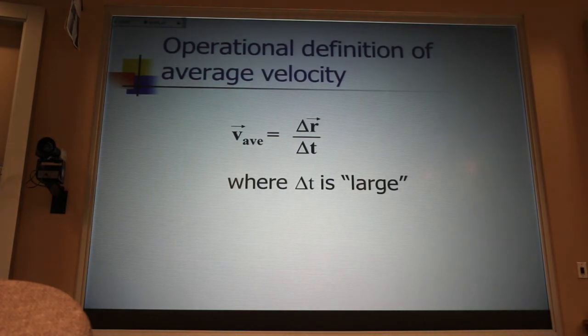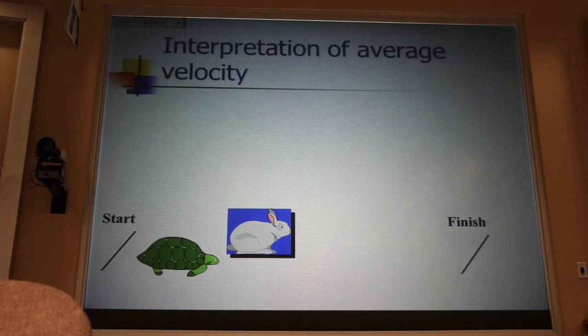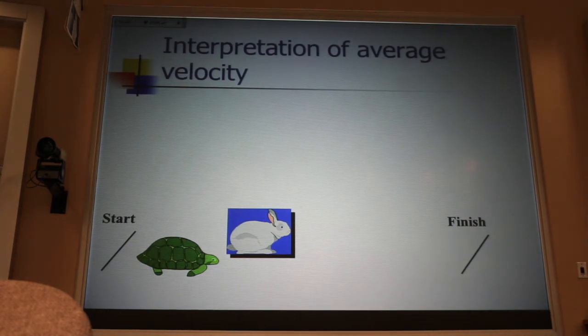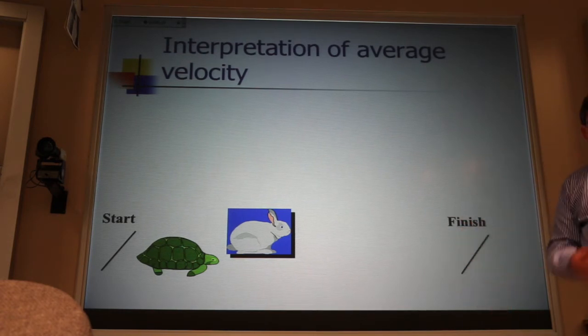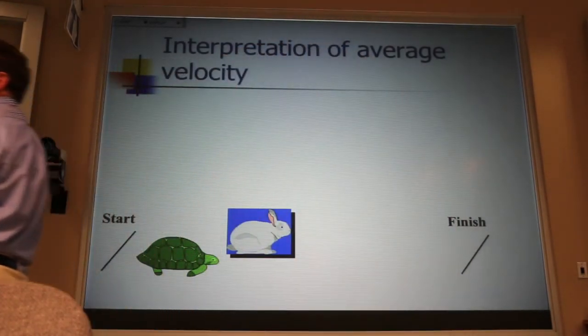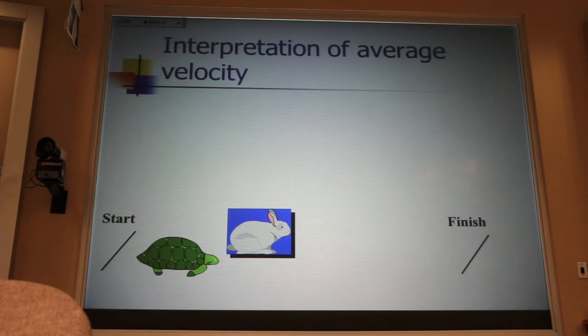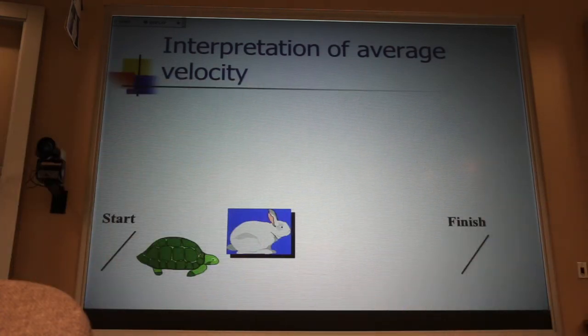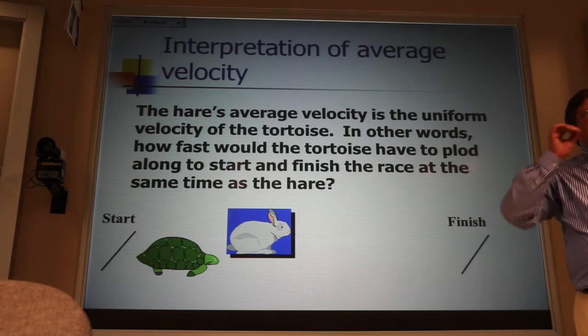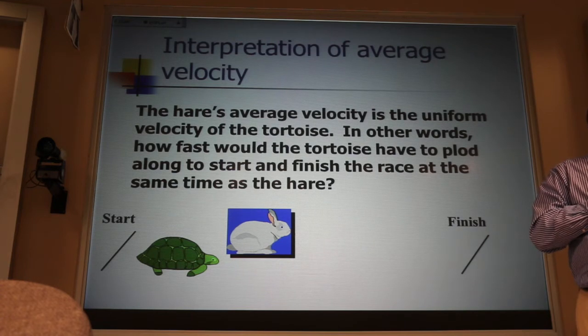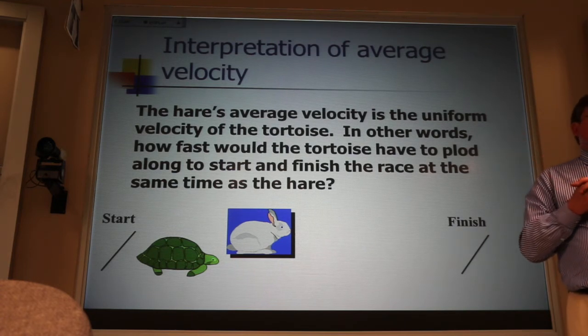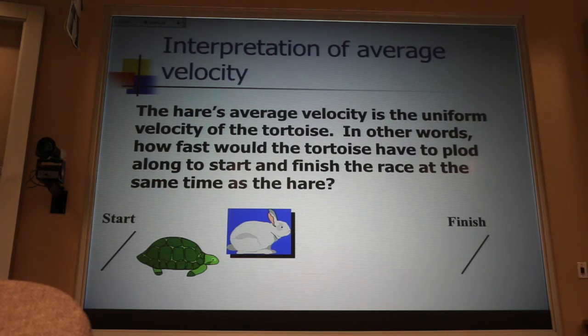This is the kind of velocity you want to use when you're trying to figure out how long it's going to take to get to Denver. You don't want your fastest speed or your slowest speed. You want your average speed. Now, I like to think of average velocity in terms of this Aesop's fable. You remember the story where the turtle and the bunny rabbit are having a race. The bunny rabbit's so much faster, gets way out in the lead, decides to take a nap. When the bunny wakes up, she sees that the turtle's just about to cross the finish line. So, she speeds across, and they have a photo finish. What that means is that the average velocity of the bunny rabbit is the same as the uniform velocity of the tortoise. They both start and finish the race at the same time. They both cover the same displacement in the same amount of time.